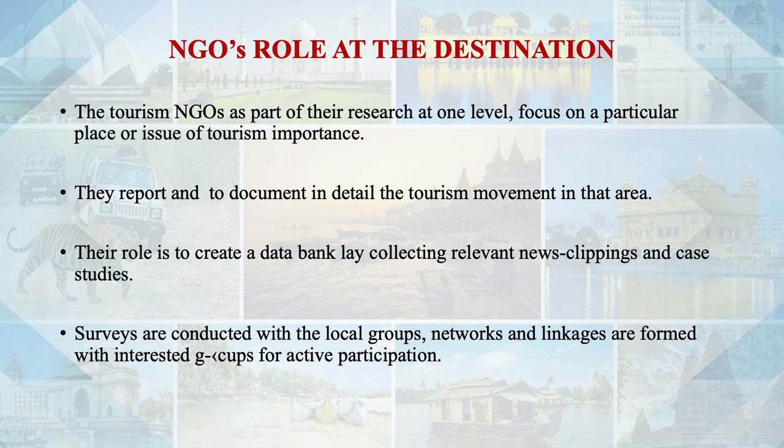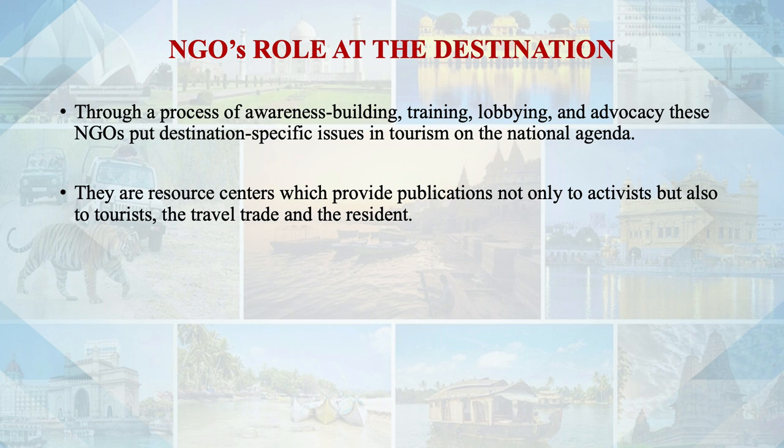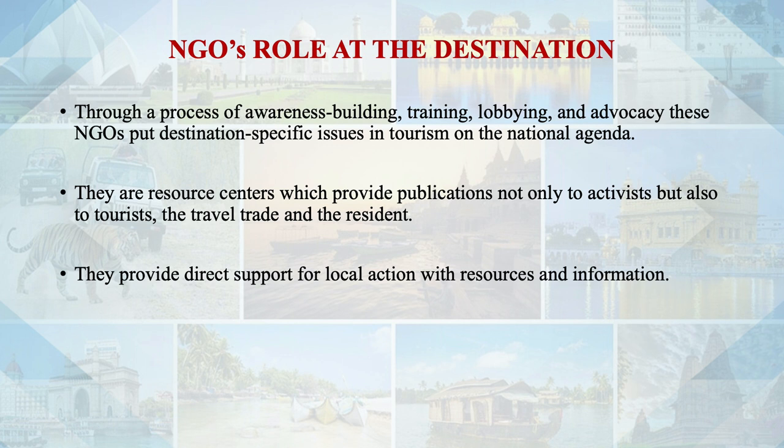For active participation through a process of awareness building, training, lobbying and advocacy, these NGOs put destination-specific issues in tourism on the national agenda. They are resource centers that provide publications not only to activists but also to tourists, the travel trade, and residents. They provide direct support for local actions with resources and information. For information collection and dissemination, these tourism NGOs collaborate with local groups at tourism destinations to collect basic empirical facts and impacts. Brief fact sheets in basic English and vernacular languages are produced.